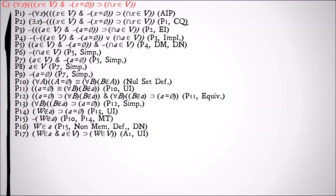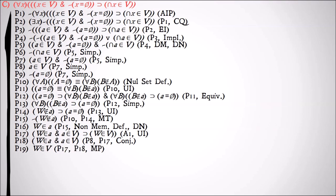W is a universal variable that we can re-instantiate back to a universal claim. Now we'll take A1 — our first axiom — and universally instantiate it to get: if W is a member of A and A is a member of V, then W is a member of V. So W is a set if we can show that A is a member of V. We do have A as a member of V, so we join that with the relevant premise and use modus ponens to show that W is a member of V.